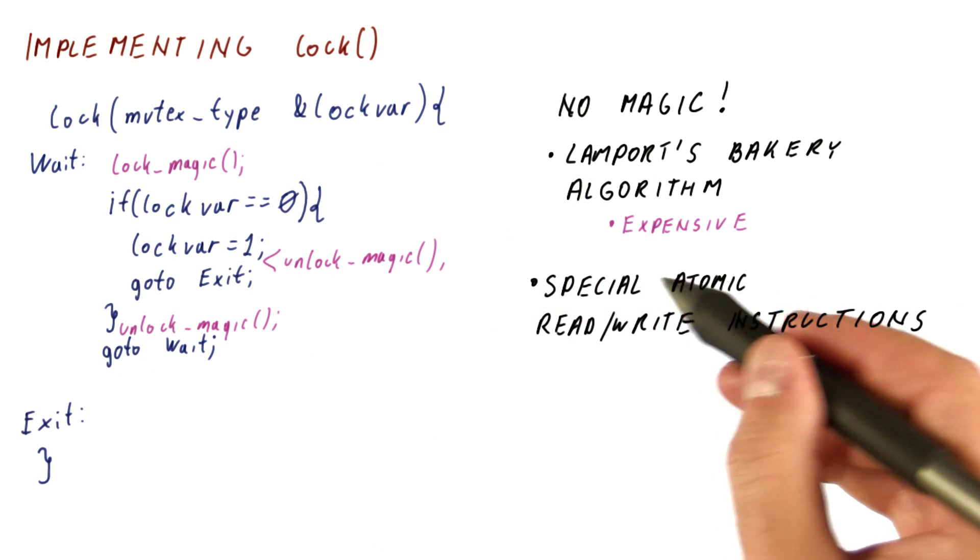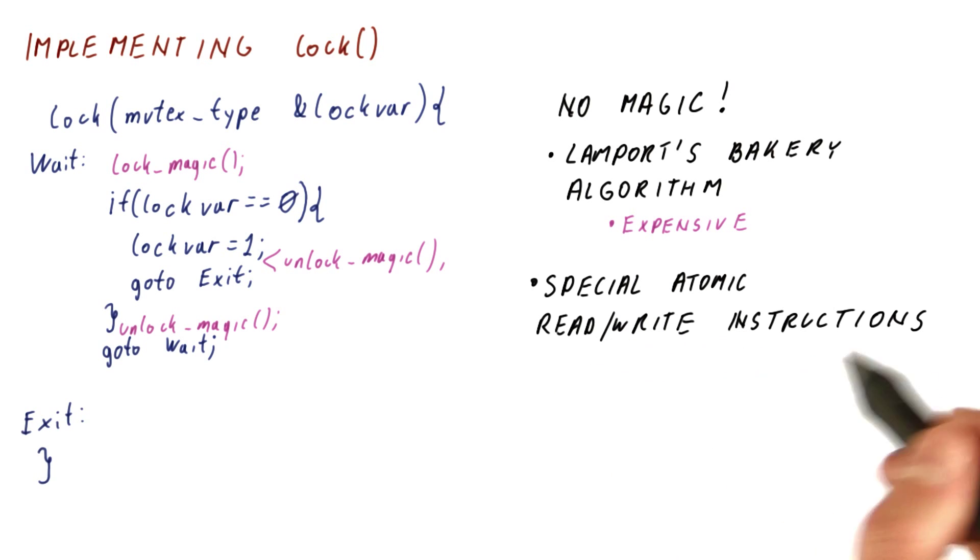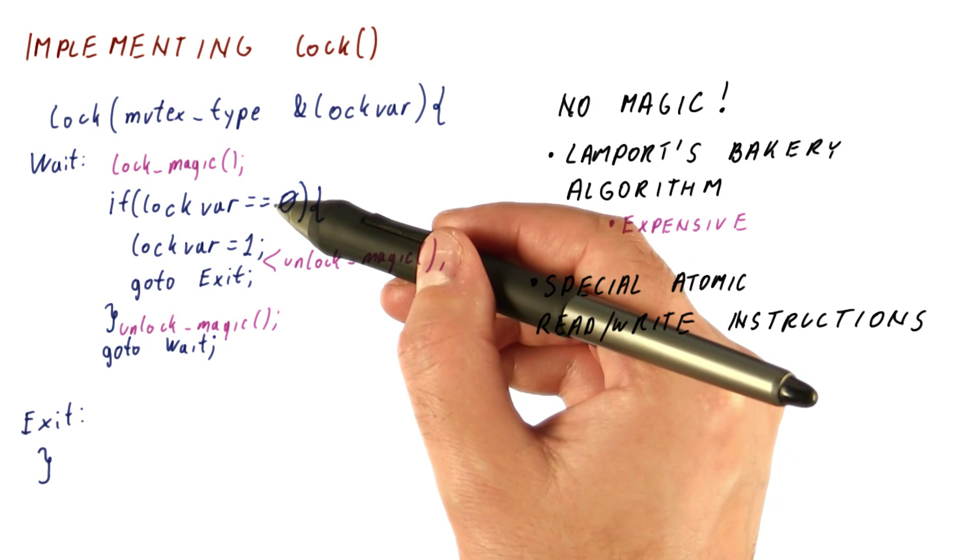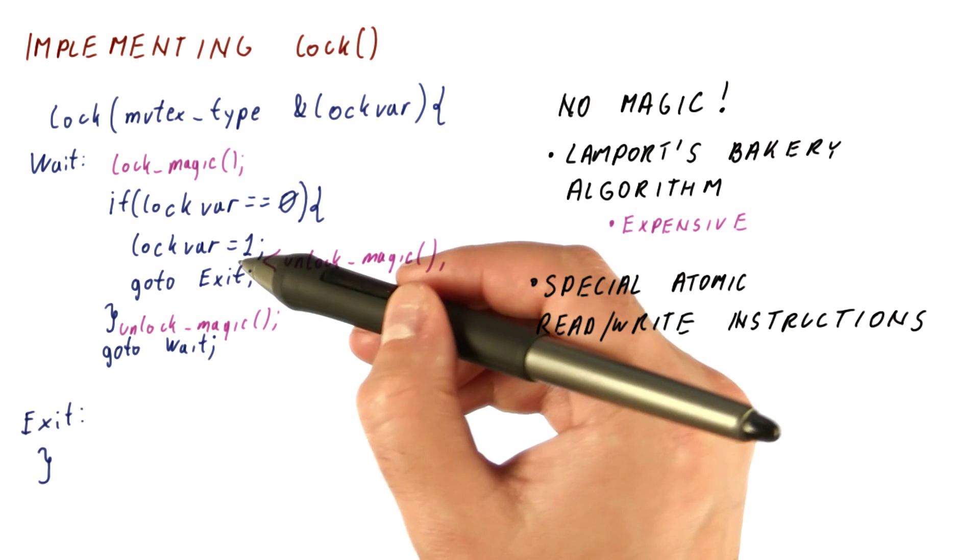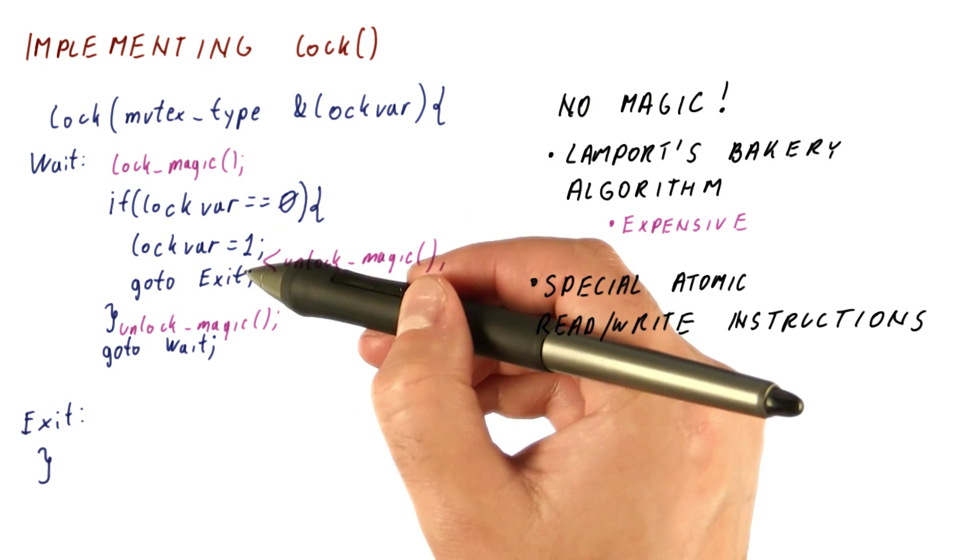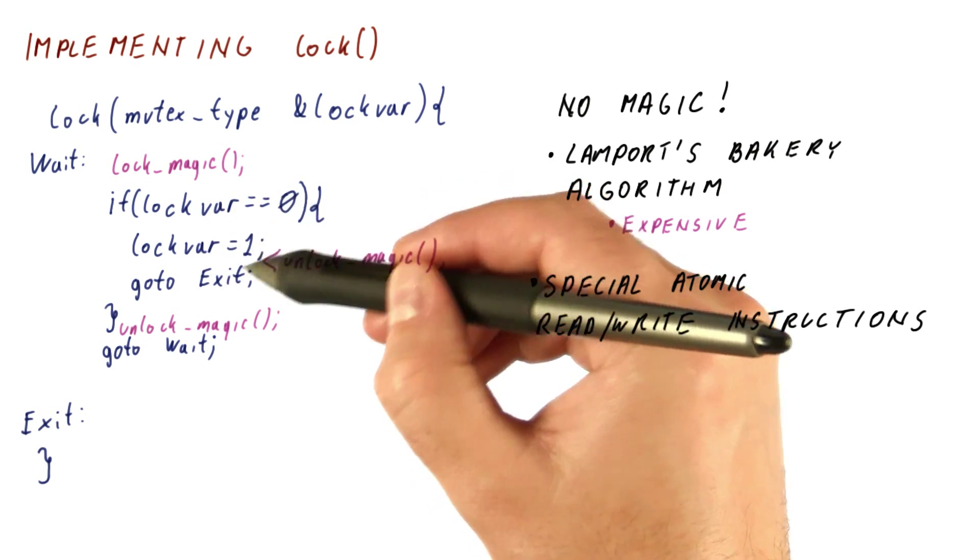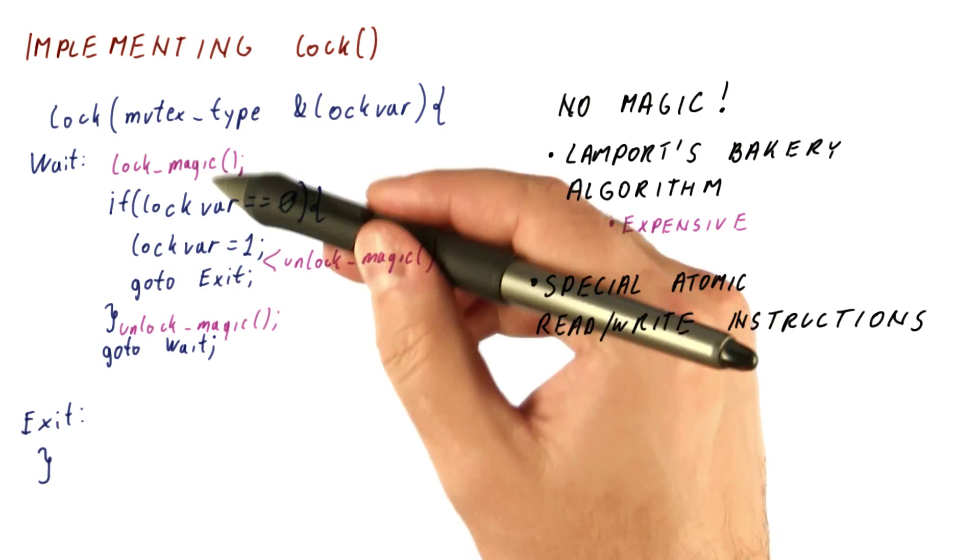The other option is to use some sort of special atomic read and write instructions. So there would be an instruction that does this check and set to one, or something similar to that, that would allow us to, in one instruction, do this without needing the magic.